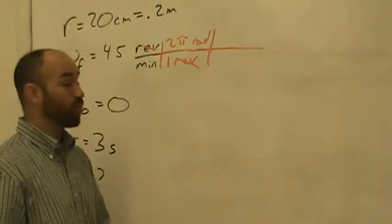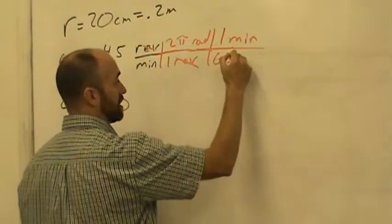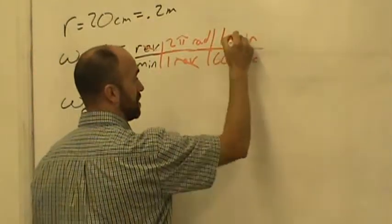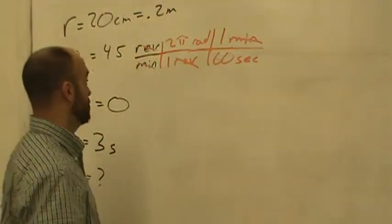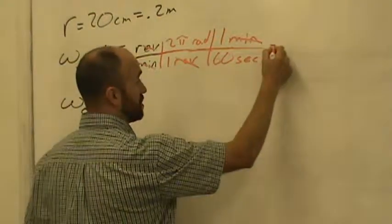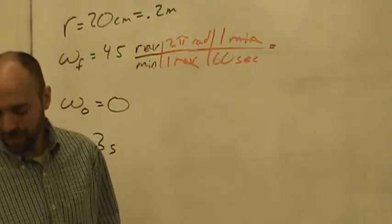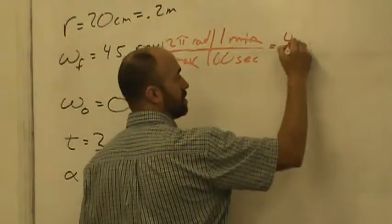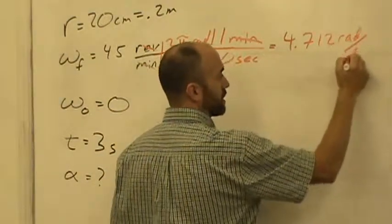Remember that there are 60 seconds in one minute. So I'm going to put a minute upstairs, 60 seconds downstairs. Minutes are going to cancel out. And now we've got radians per second. Those are standard units. So when you punch this out, you're going to get 4.712 radians per second.